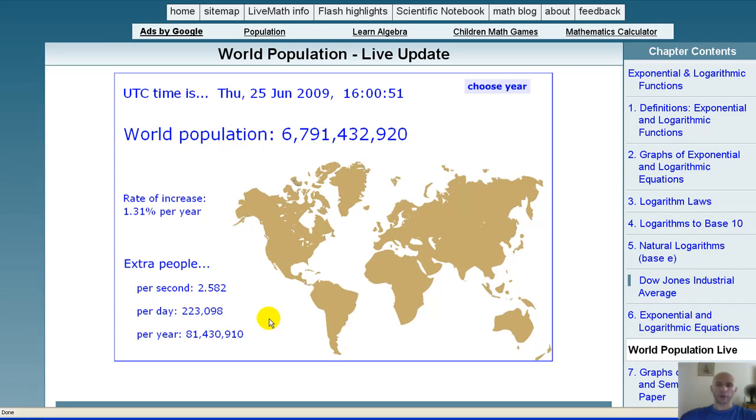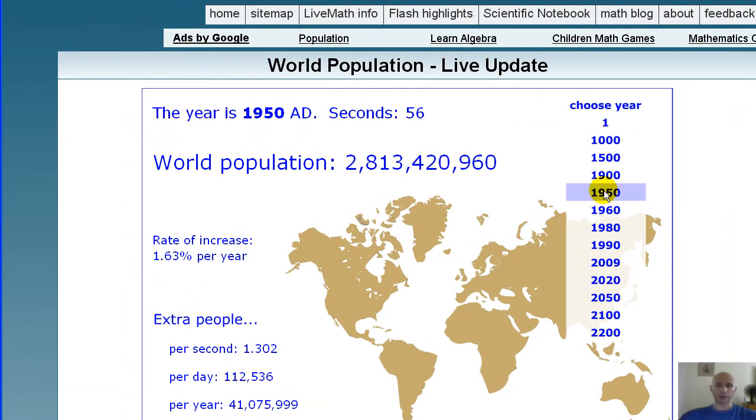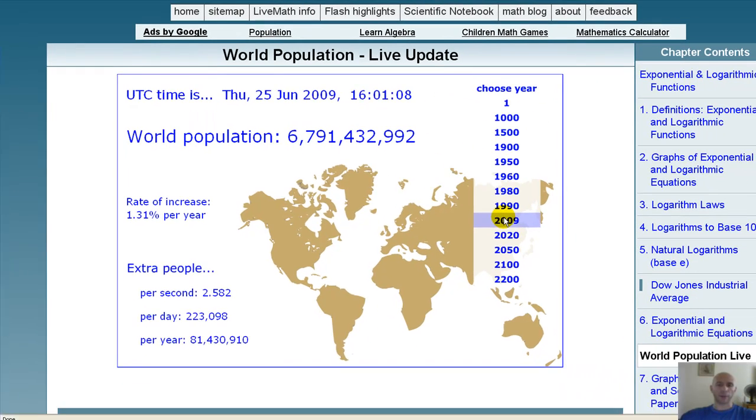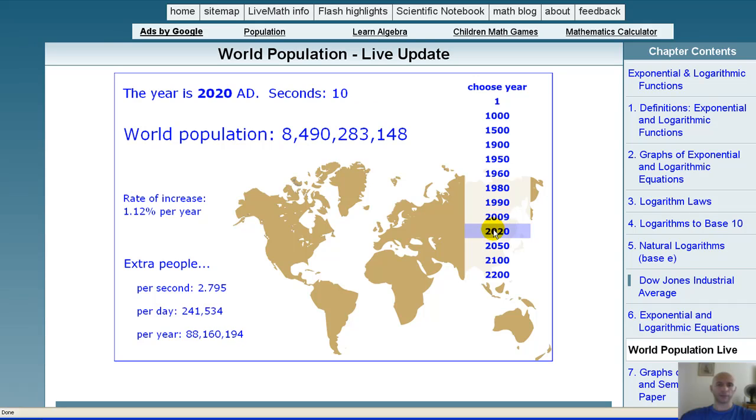On the upper right, you can click on choose a year. Most of you were probably born in the 80s or 90s. You can see in 1980, we were looking at about 4.9 billion. 1990, 5.7 billion. And as time passes, you can see the population starts to grow dramatically. And in fact, it gets quite scary as we reach the year 2100 and even 2200.